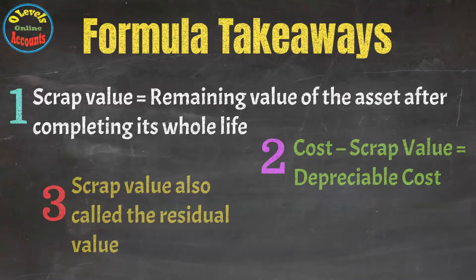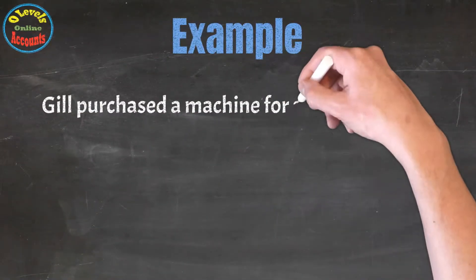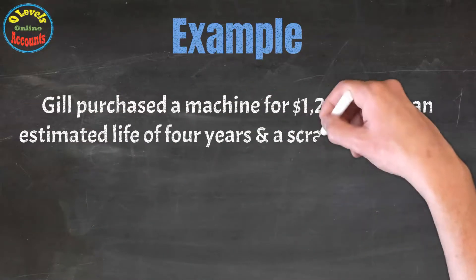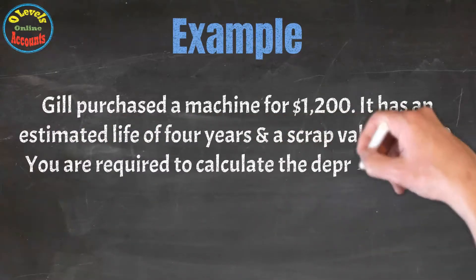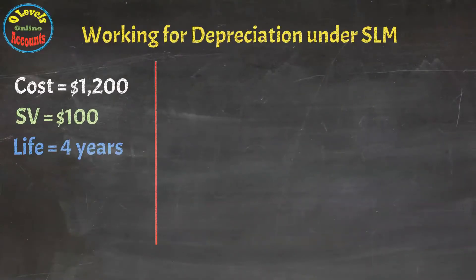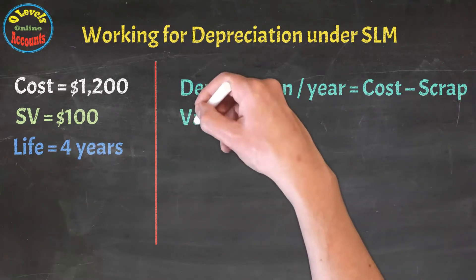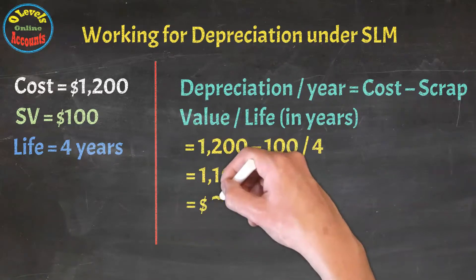Let's take an example to understand. In this example, Gil purchased a machine for $1200 with a scrap value of $100 and an estimated life of four years. We are required to calculate depreciation by the straight line method. Let's look at the solution. We put all the given values in the formula: cost minus scrap value divided by life, and got the depreciation per year value is $275.